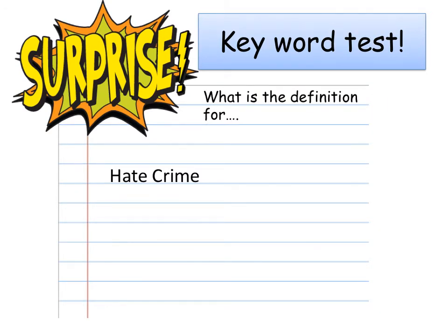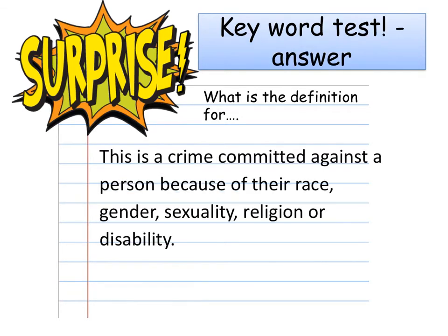Next, another keyword test: what is the definition for a hate crime? A hate crime is a crime committed against a person because of their race, gender, sexuality, religion or disability.